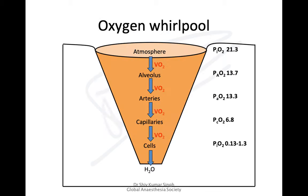The partial pressure of oxygen we breathe is around 21.3 kPa. It is easy to talk in terms of kPa because percentage and kPa match. The partial pressure of oxygen at atmospheric pressure is 21 percent; 1 kPa equals 760 mmHg. As the air passes through the nose, it is humidified and picks up water, so the partial pressure of oxygen drops. The partial pressure of water vapor is 47 mmHg.